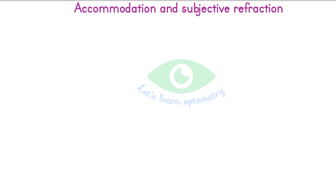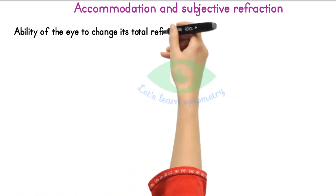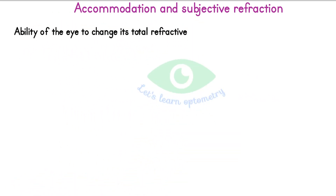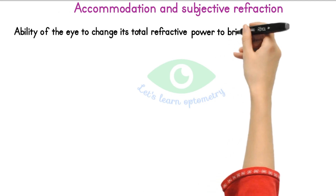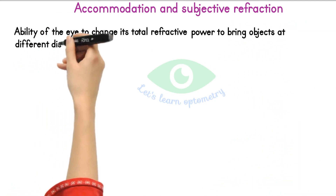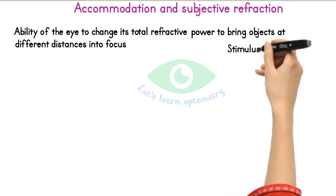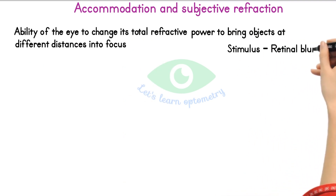Accommodation and Subjective Refraction. Accommodation is the ability of the eye to change its total dioptric power to bring objects at different distances into focus. The stimulus to accommodation is retinal blur.